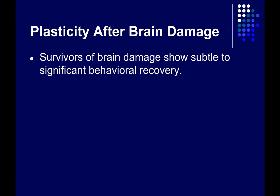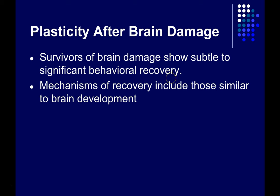Survivors of brain damage can show anywhere from subtle to substantial, almost complete behavioral recovery. There are a lot of factors that influence this, including the age of the patient when they had the brain damage, the extent of the damage, and the exact functions that were lost. Many of the mechanisms of recovery after brain damage are similar to those that occur during early brain development — for example, new branching of axons and dendrites can occur.